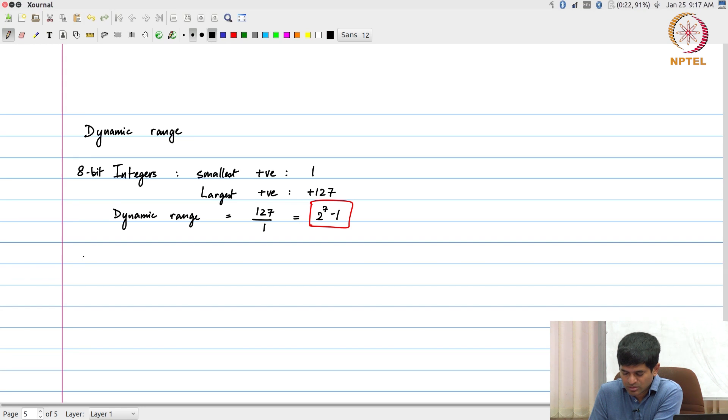What happens to 8-bit 4 dot 4 numbers? What is the smallest value that I can have? 2 power minus 4.